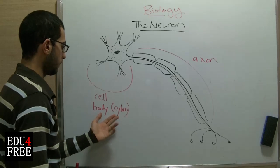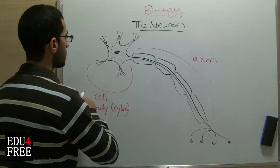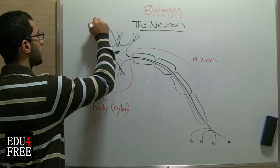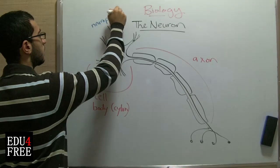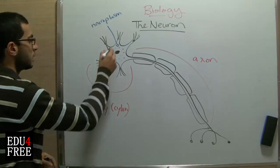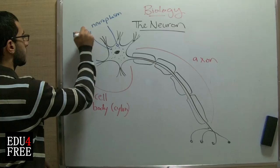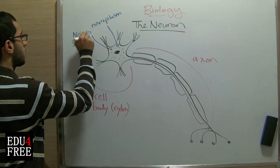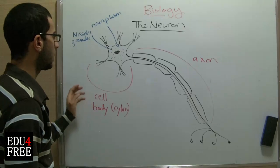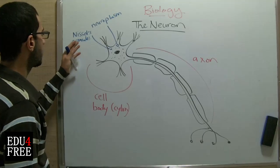First we will talk about the cell body or the cyton. Inside the cell body or the cyton, there is a liquid which is called the neuroplasm. And this neuroplasm contains neurofilaments and these dots here, which are called Nissl's granules. Nissl's granules store the food inside the nerve cell, or store the food for the nerve cell.